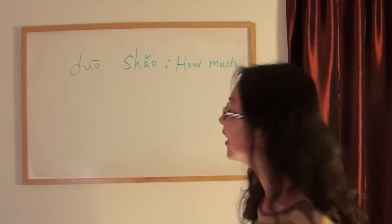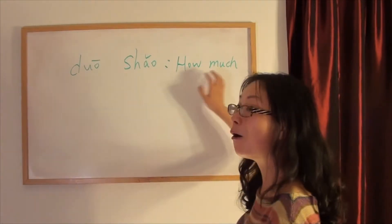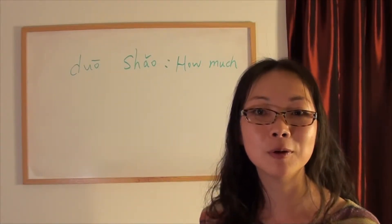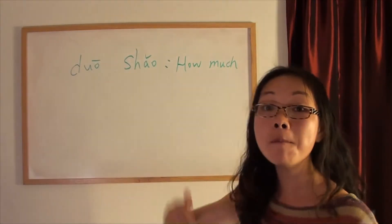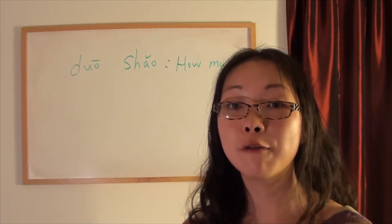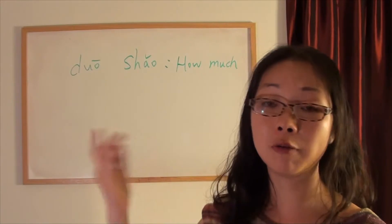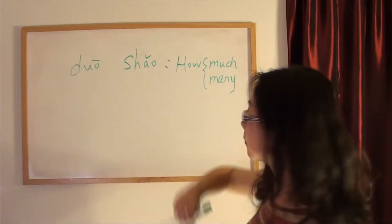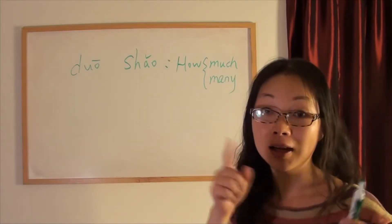More importantly, 多少 means 'how much' for quantity. But it does not mean 'how much' for price. So one more time: 多少 is to ask how much for quantity — it doesn't ask how much for money or price. If you want to ask 'how much is that t-shirt?' in English there's no difference, you just say 'how much?' But in Chinese, we add one more word after 多少. I'll tell you in the future — it's very easy.